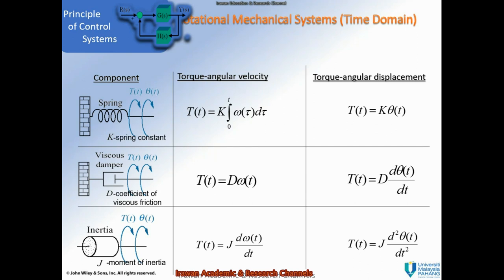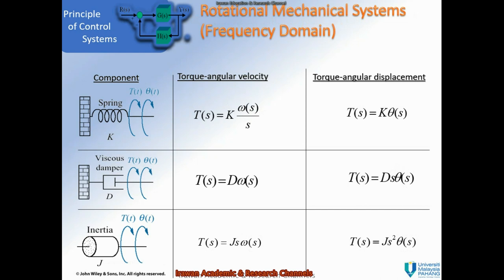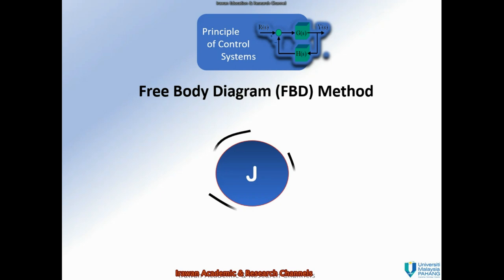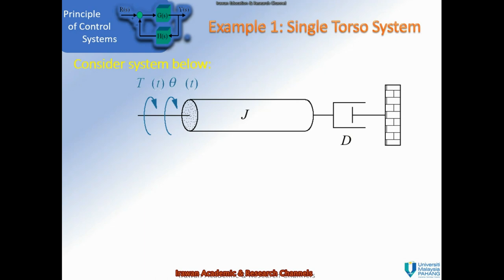For torque-angular displacement with inertia, you double-derive the angular displacement with respect to time, then multiply by the inertia J. Same as translational systems, this rotational system also has a Laplace transform form that can be tabulated. This form will be used in each method of deriving the transfer function — for this topic, we cover the FBD and EMI methods.